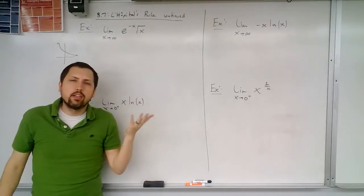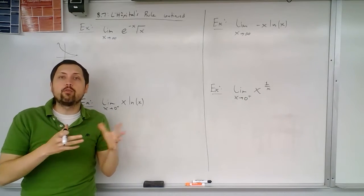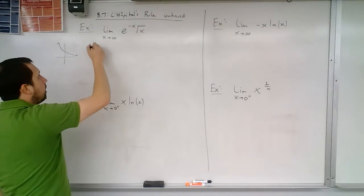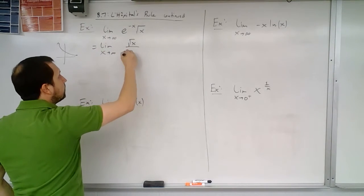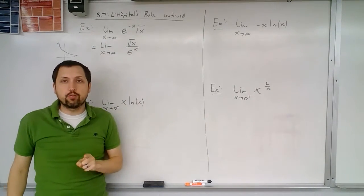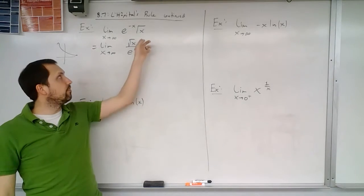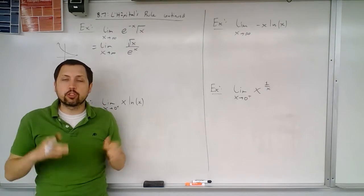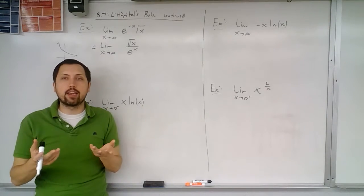Hopefully you're thinking: can I just do something with e to the negative x? That's exactly what you want to do. If there's an easy choice of what could go on the denominator, absolutely go ahead and put that there. So this becomes the limit as x tends to infinity of the square root of x divided by e to the x. This is indeed a fractional form, and here we have infinity over infinity — still an indeterminate form. You're just going to change the type of indeterminate form as you rewrite using algebraic manipulations.